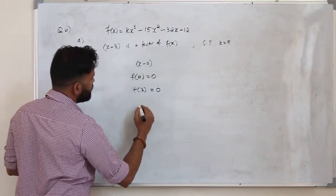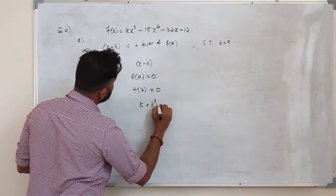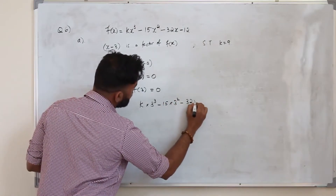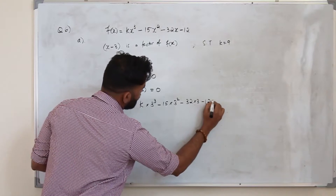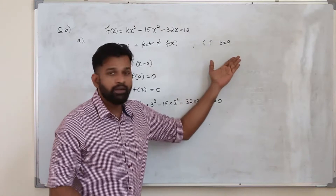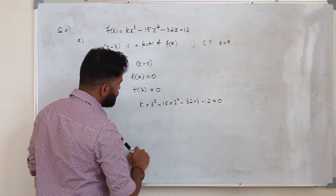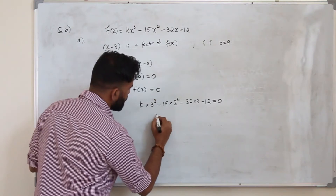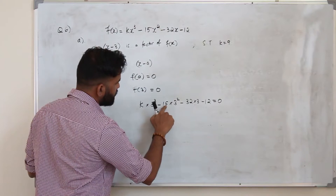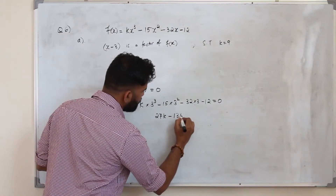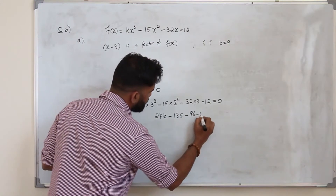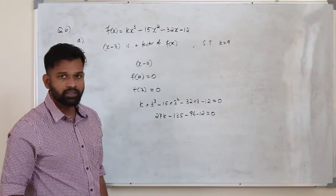When you replace x by 3: k times 3 cubed minus 15 times 3 squared minus 32 times 3 minus 12 equals 0. Simplifying: 3 cubed is 27, so 27k minus 15 times 9 is 135, minus 96, minus 12 equals 0. Now make k the subject.